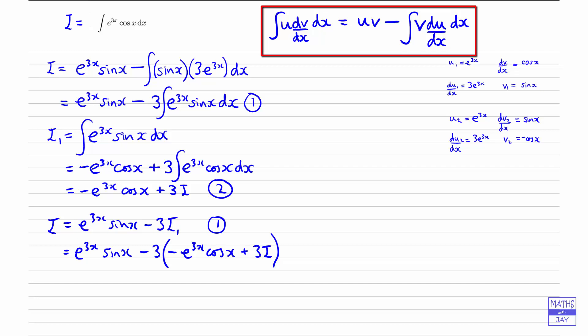So what can we do? Let's just multiply out this bracket. That would be a good idea. So we've got e to the 3x sinx. That stays the same. Minus 3 times minus whatever that is will be a plus. So plus 3e to the 3x cosx. And then we've got minus 3 times plus 3i. So that's going to be minus 9i.